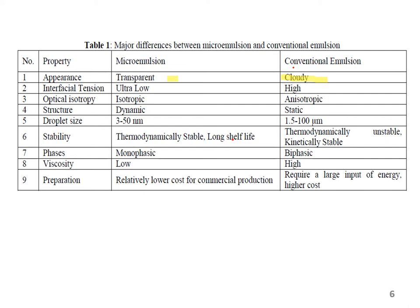If you have seen any marketed emulsion, you will see that it is opaque and cloudy in appearance. However, the microemulsion, by virtue of the small size of the dispersed phase, appears to be transparent to the naked eye. The surface tension at the interface between the globules and the external phase is very low because of the use of high concentration of surfactants as well as co-surfactants, whereas the interfacial tension in case of the conventional emulsion is higher. The microemulsion is considered to be an isotropic system, whereas the conventional emulsion is considered to be an anisotropic system.